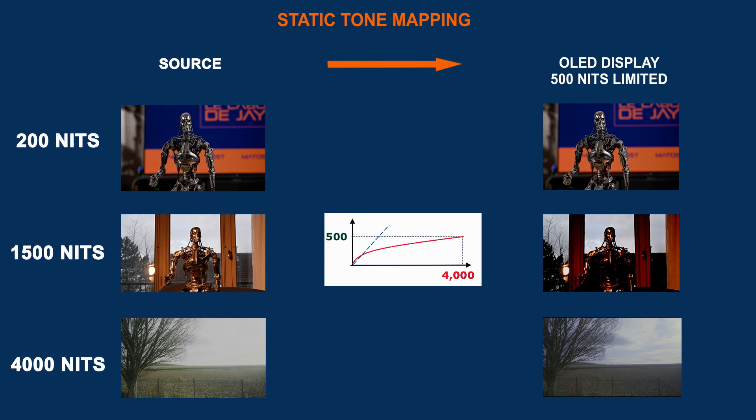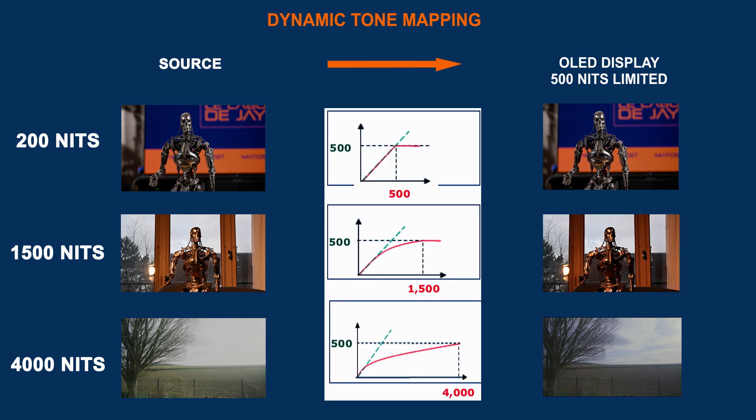But if you have dynamic metadata, you will have dynamic tone mapping. That means there will be scenes where the content is reduced more, some others less, and so on. It will adapt scene by scene, and the output will be more precise if you use dynamic metadata.